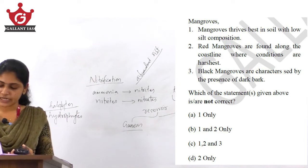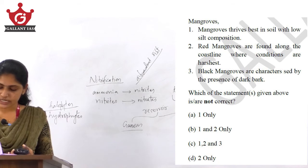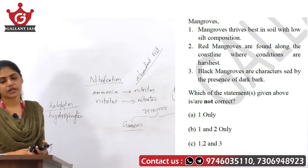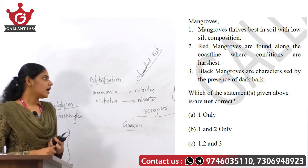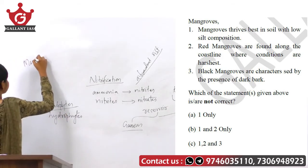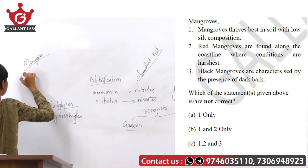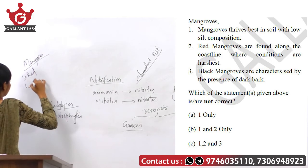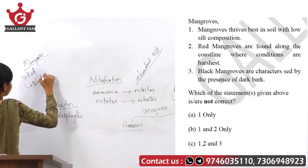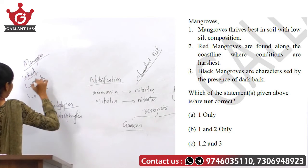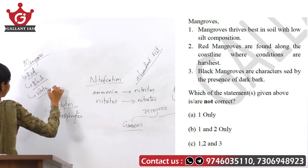The second statement says red mangroves are found along the coastlines where conditions are harshest. The third statement says black mangroves are characterized by the presence of dark bark. There is another classification related to mangroves — three types: red, black, and white mangroves.